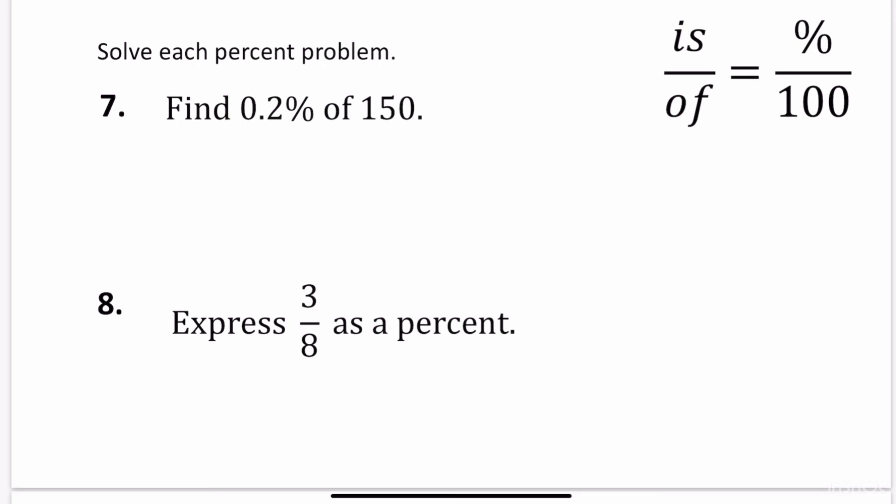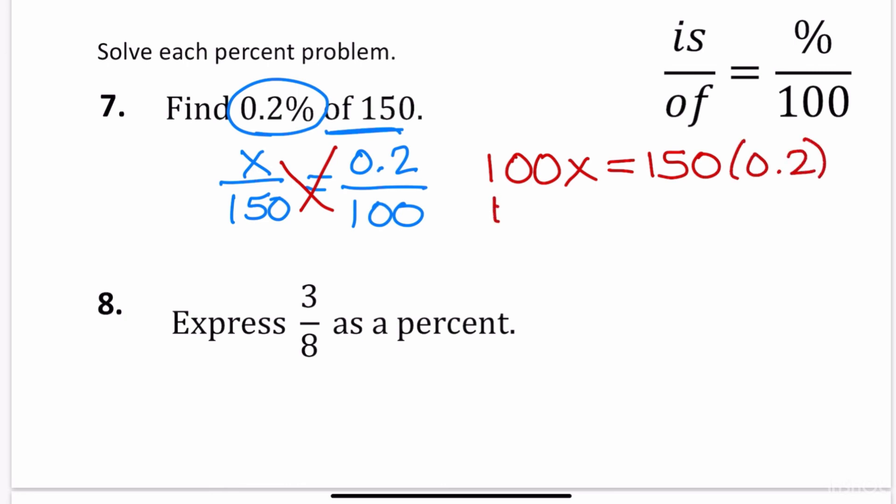Number 7, find 0.2% of 150. Again, is over of equals percent over 100. The of goes at the bottom. The of is going to be 150. The percent is 0.2. So I put 0.2 over 100 and I'm solving for the is. So I cross multiply. So when I cross multiply, I get 100x is equal to. So use your calculator to multiply. 150 times 0.2. And that's just going to equal 30.